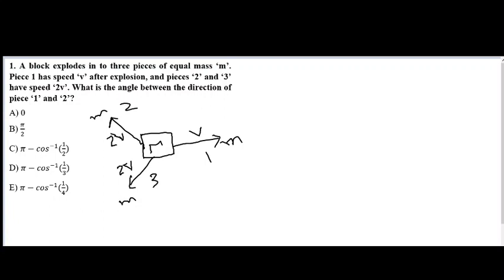We can find the angle between piece 1 and piece 2 by using the conservation of momentum. As all these pieces have equal mass, so for conservation of momentum their velocity vectors sum should be equal to 0. As we have three velocity vectors, for their sum to equal 0, we can write them as three sides of a triangle.